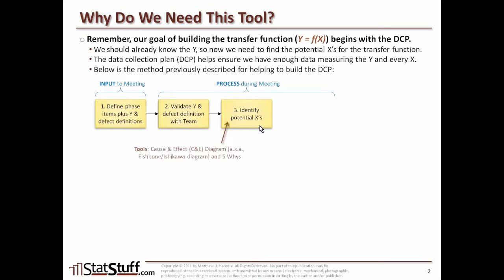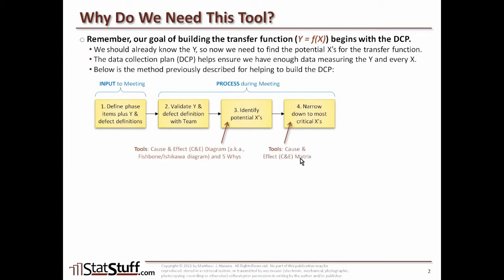Next we want to identify all the potential X's that the team believes could be part of that transfer function. We might use several tools like the cause and effect diagram — also called the fishbone and Ishikawa diagram — and also the 5 Whys tool. Once we've identified the potential X's, we move on to narrowing them down to what we consider to be the most critical X's, which is where we might use the cause and effect matrix, or C&E matrix. Then the last part, as an output from the meeting, is to build the data collection plan for those critical X's we identified.